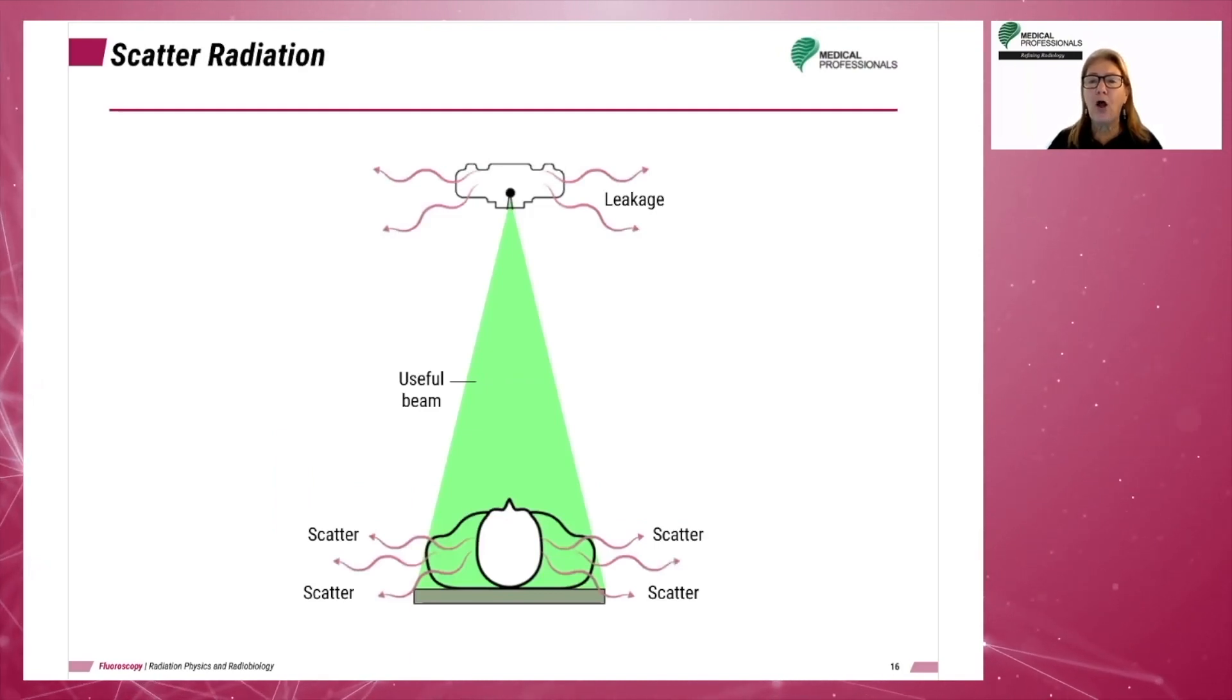Recall that all energy travels in straight lines, and will continue into infinity unless something stops it or causes it to change direction. Change in direction of x-ray photons is referred to as scatter. Scatter radiation is created when x-ray photons interact with matter and scatter off in different directions. There are two types of scatter radiation, coherent and Compton.